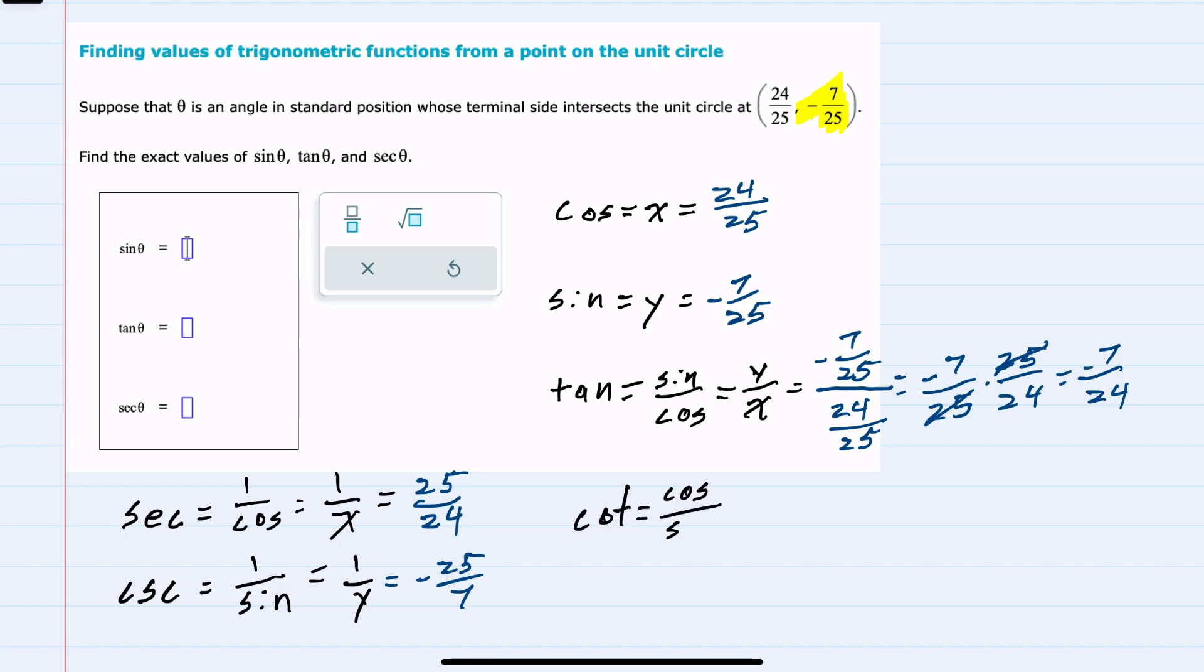And then our last trigonometric function is cotangent, which is cosine over sine, or 1 over the tangent. This would also be x over y. But since we know it's the reciprocal of the tangent, and we've already identified the tangent, the reciprocal would just be negative 24/7.